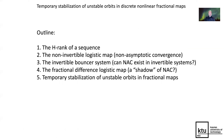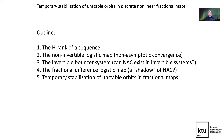This is the outline of my talk. I will introduce H-Ranks and demonstrate their applicability for non-invertible maps, using the Logistic Map as a typical example, and will show non-asymptotic convergence. Then I will switch to invertible systems, using the invertible bouncer system as a typical example, and discuss the existence of non-asymptotic convergence in invertible systems. Then I will discuss the fractional difference logistic map as a typical example of fractional maps, and finally talk about temporary stabilization of unstable orbits in fractional maps.